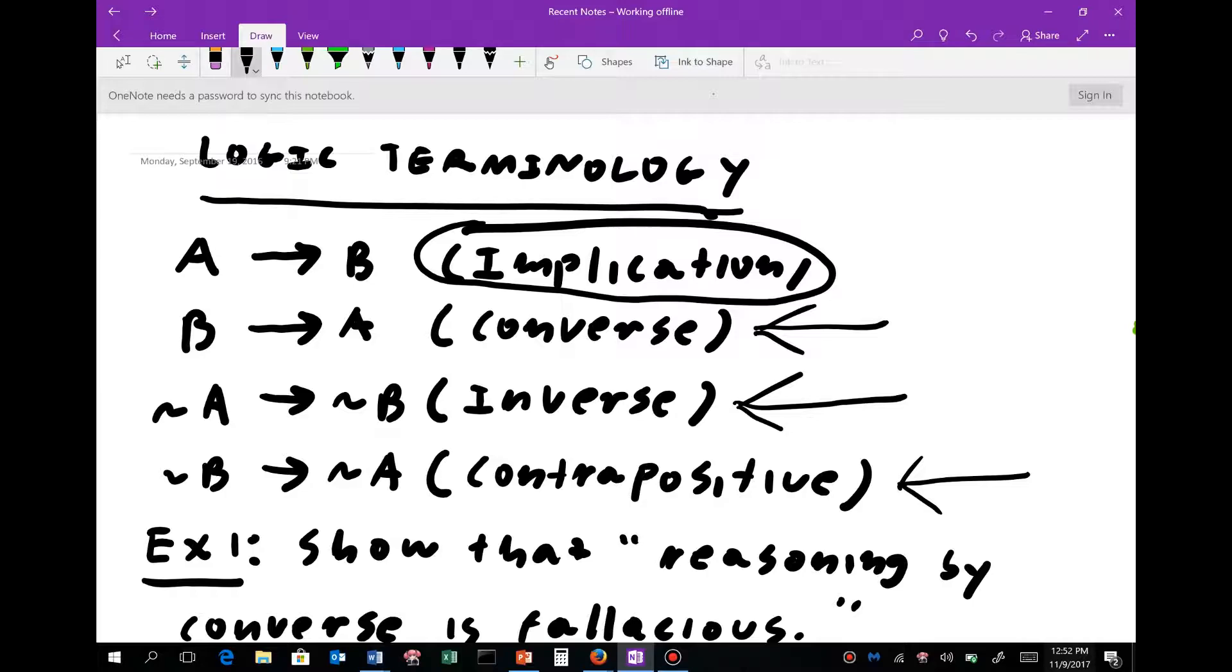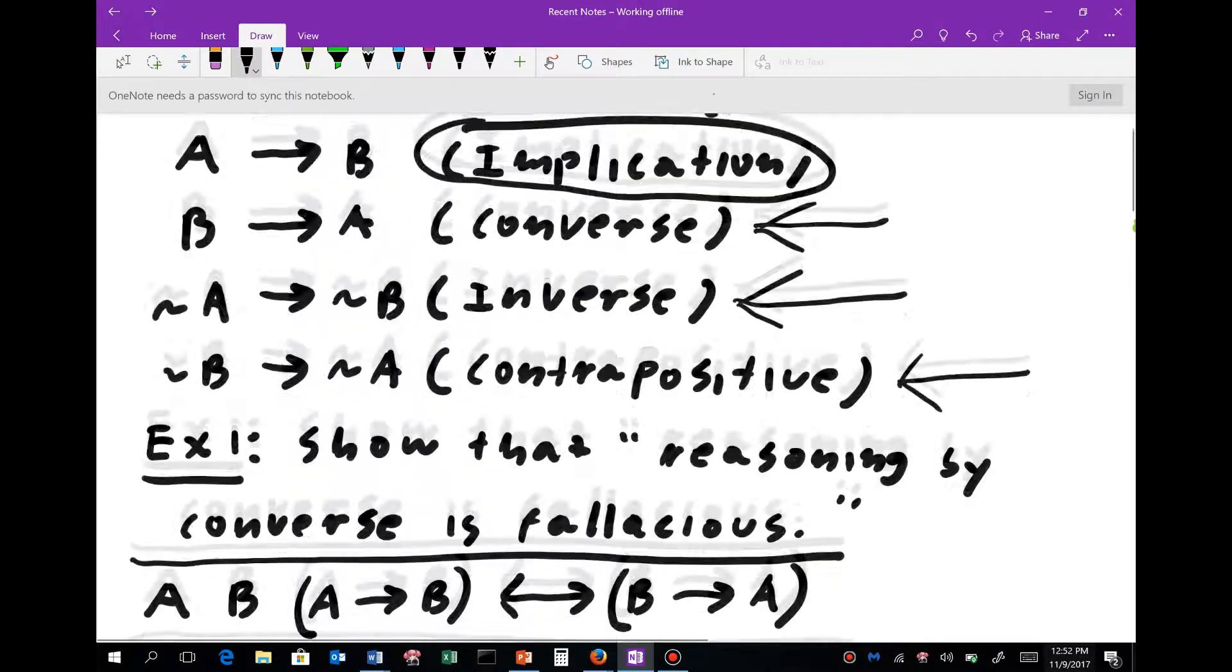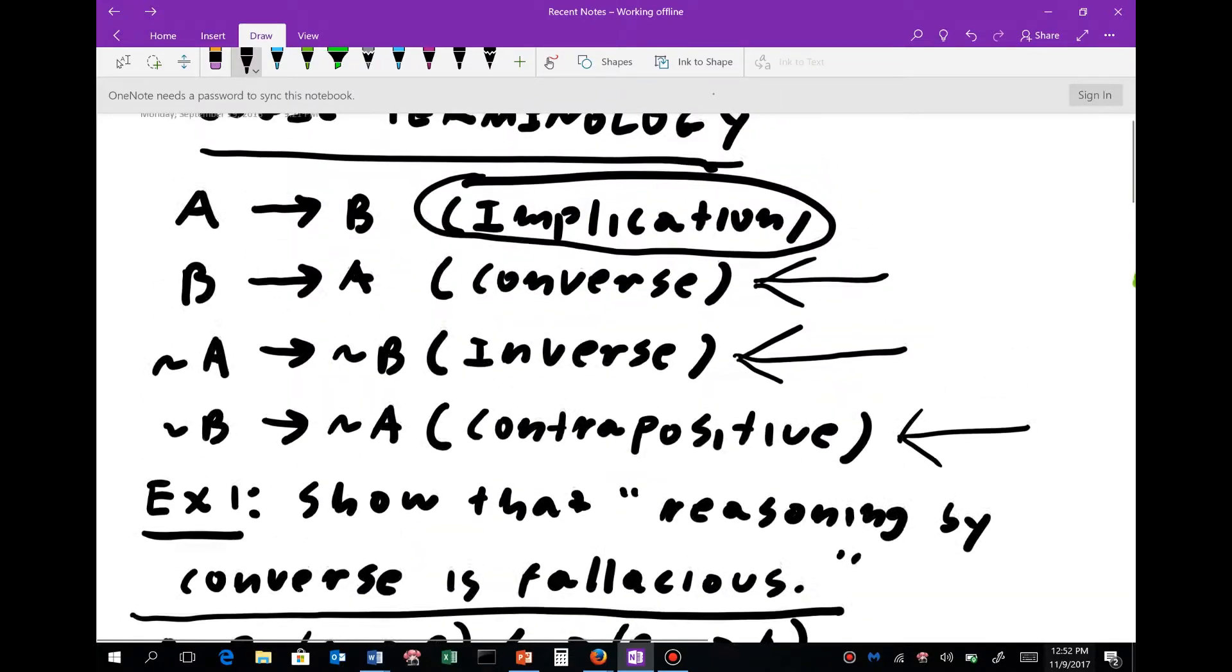A typical exam question that you might encounter might be something like this: Show that reasoning by converse is fallacious. That's just a fancy way—fallacious is a fancy way of saying false, not true, not valid. So if you wanted full credit on an exam, how would we go about this?